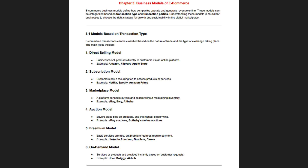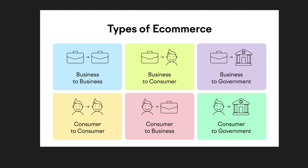First, let's look at models based on transaction type, which you can also see on screen. This type of transaction is based on the nature of the trade, the businesses involved, and the type of exchange — such as direct selling, subscription models like Netflix's monthly or yearly subscription, marketplace models, auction models, freemium models with both free and premium tiers, and on-demand models like online food delivery apps.